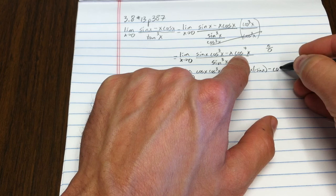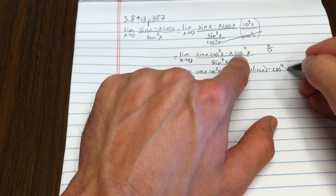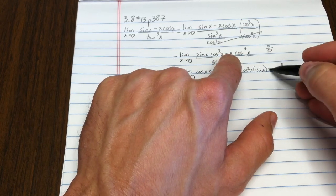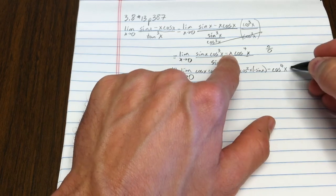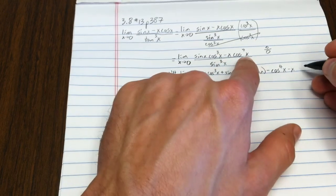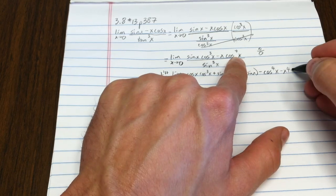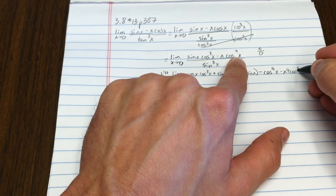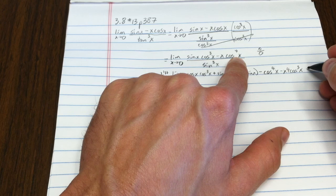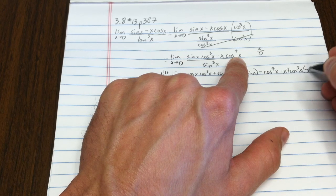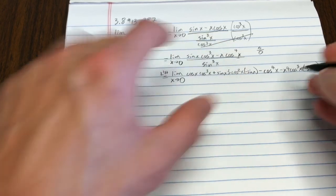Now I've got to use the product rule on the second. Minus cosine to the fourth x. That's negative x, its derivative is just negative 1. Now I'll leave the negative x alone. Take the derivative of the cosine to the fourth x, using the chain rule, that's 4 cosine to the third x, times the derivative of that, which is negative sine x.